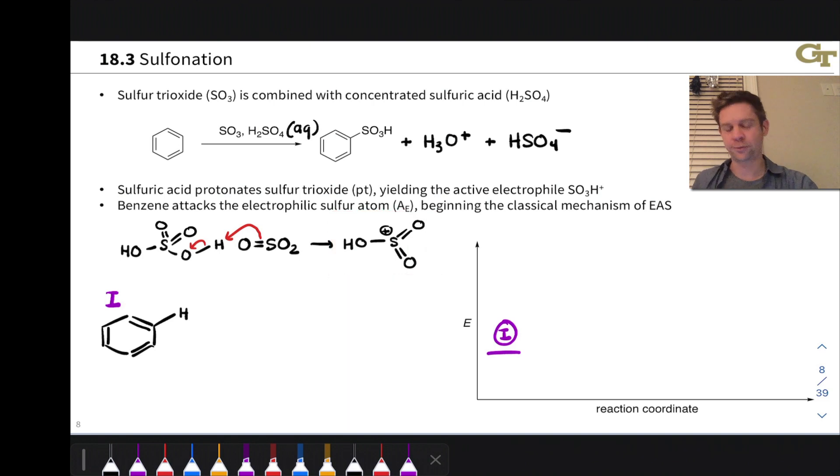One way to draw that Lewis structure is like this, with positive formal charge on sulfur. This highlights the electrophilic nature of this sulfur atom. The positive charge on the sulfur in this Lewis structure really highlights that sulfur is profoundly electrophilic, and this is the active electrophile in sulfonation reactions, particularly the sulfur atom.